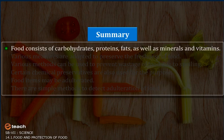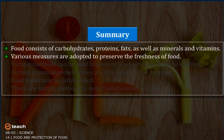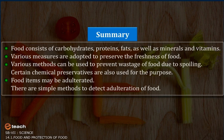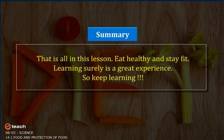Summary: Food consists of carbohydrates, proteins, fats, as well as minerals and vitamins. Various measures are adopted to preserve the freshness of food. Various methods can be used to prevent wastage of food due to spoiling. Certain chemical preservatives are also used for this purpose. Food items may be adulterated, but there are simple methods to detect adulteration of food. Eat healthy and stay fit. Keep learning.